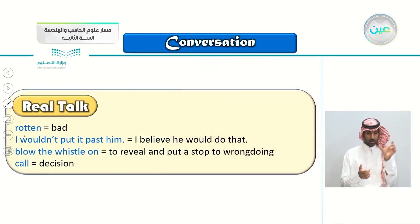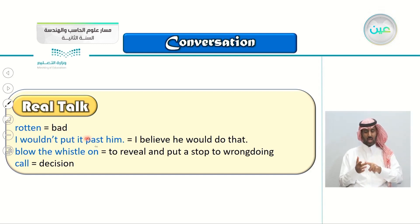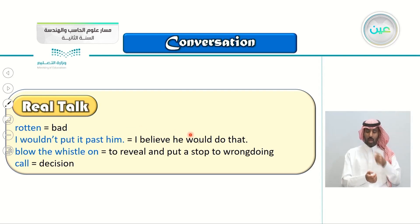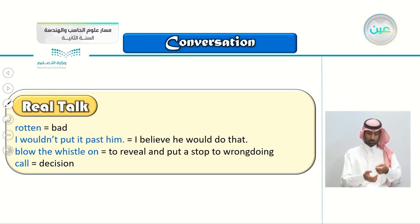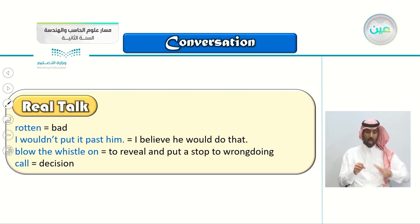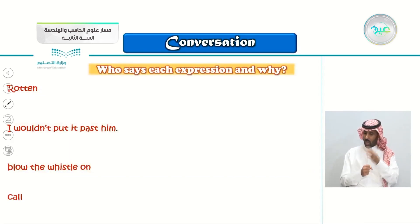Rotten means bad. When Majid said 'he put you in a rotten position,' it means a bad position. 'I wouldn't put it past him' — when someone asked if the co-worker might steal from the cash register, Khaled said 'I wouldn't put it past him,' meaning he believes the person would do that. 'Blow the whistle' means to reveal and put a stop to wrongdoing — to tell the manager. 'Call' means decision.